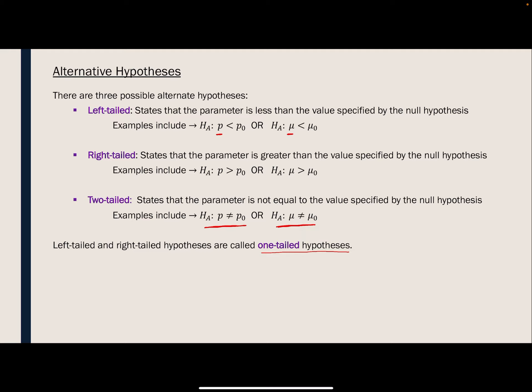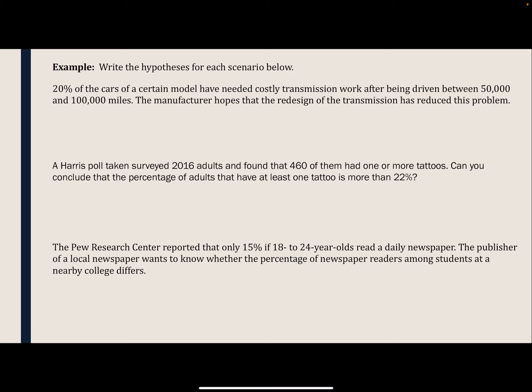The best way to look at these is to look at examples. So on this page, these all have to do with proportions. So when I write the null and alternative hypotheses, I'm going to be using P's. In the first example, it says 20% of the cars of a certain model have needed costly transmission work after being driven between 50,000 and 100,000 miles. The manufacturer hopes that the redesign of the transmission has reduced this problem. So the percent that is the current level is 20%. So the null hypothesis is that the proportion hasn't changed, and it's still 20%. But the alternative hypothesis is that this new redesign of the transmission has reduced the problem of these cars needing work. So that would reduce the proportion to be less than 20%.